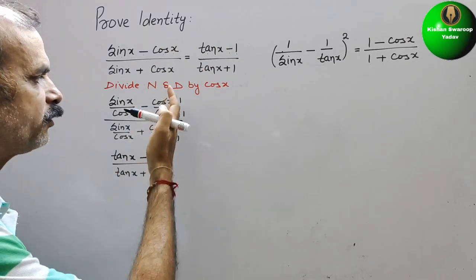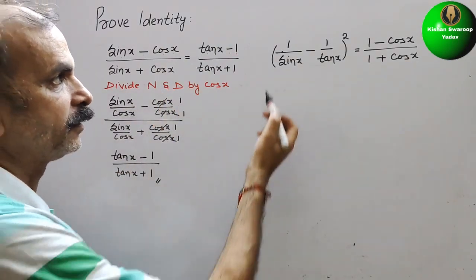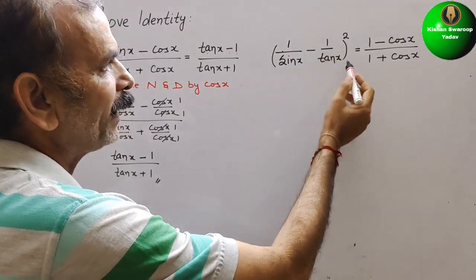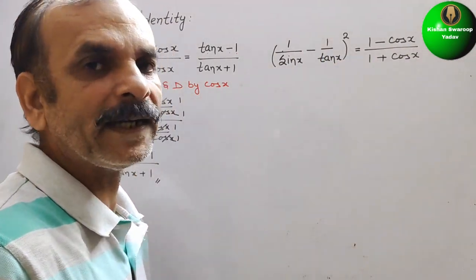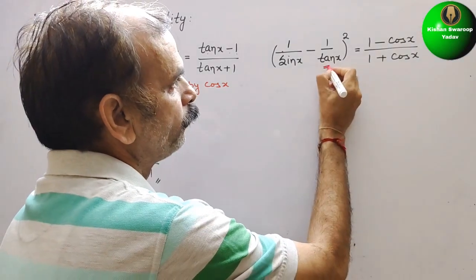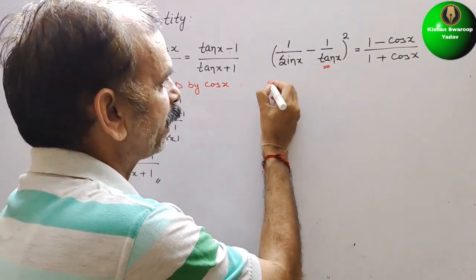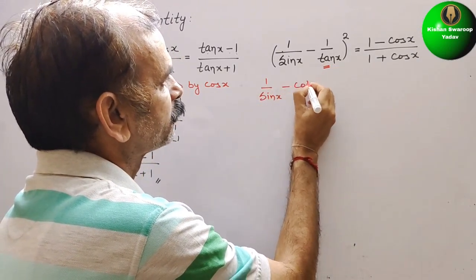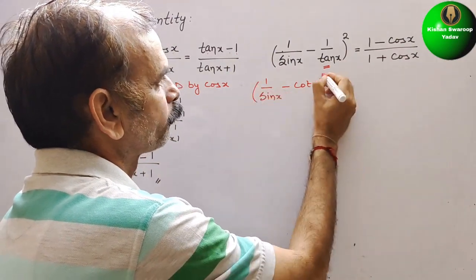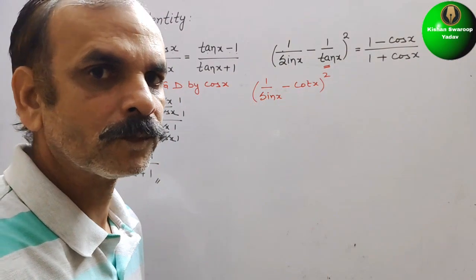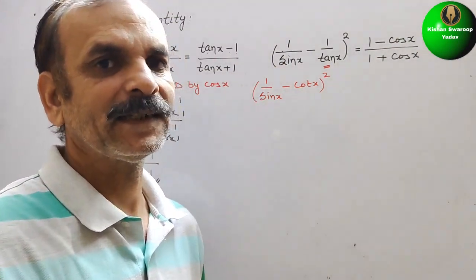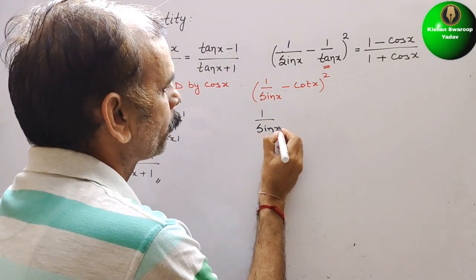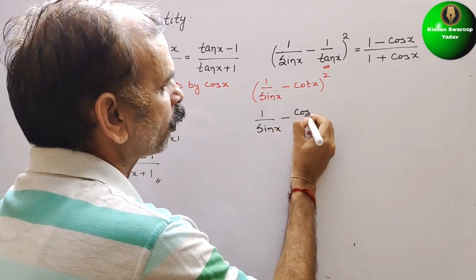Now the next problem: they have given (1/sin x - 1/tan x)². We know that 1/tan x is cot x, so here we will write (1/sin x - cot x)². Now cot x is cos x/sin x, so we will substitute that.